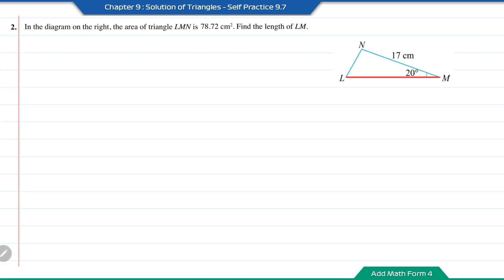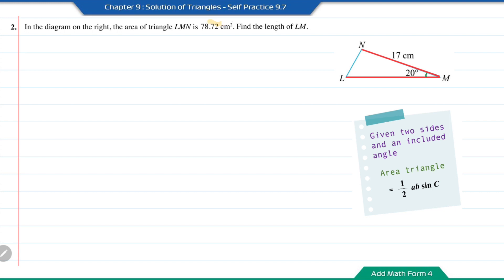Using the length LM and the length NM, the 20-degree angle becomes the included angle. The area of the triangle, which is 78.72, can be found using the formula 1 over 2 AB sin C. So 1 over 2 times LM times 17 times sin 20° equals 78.72.